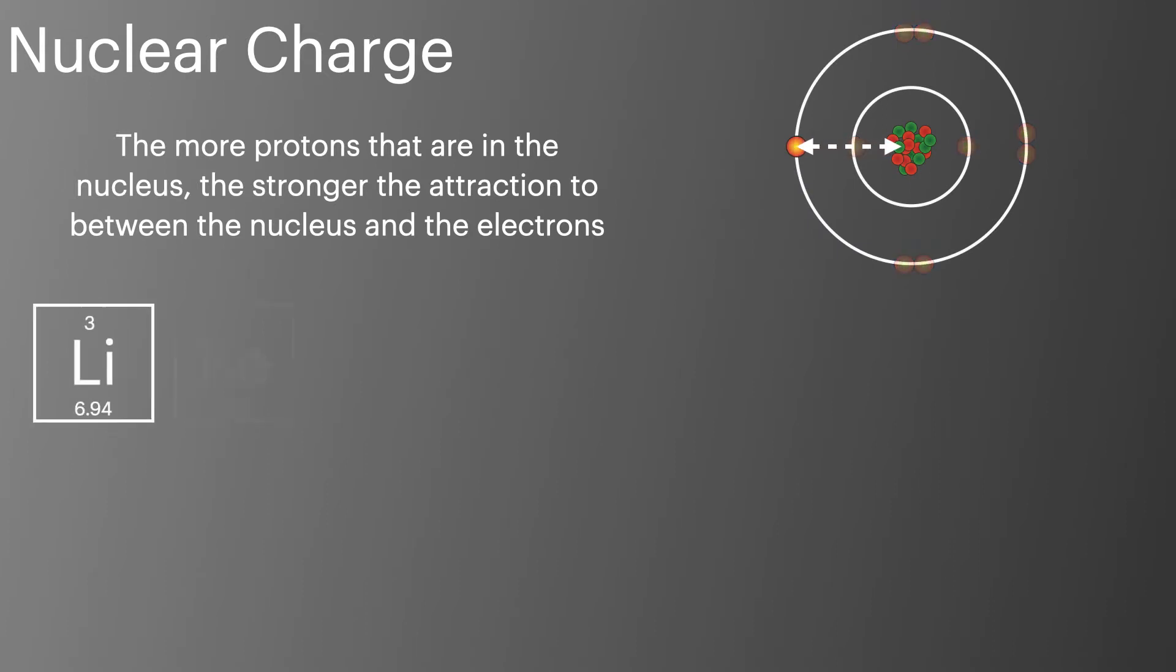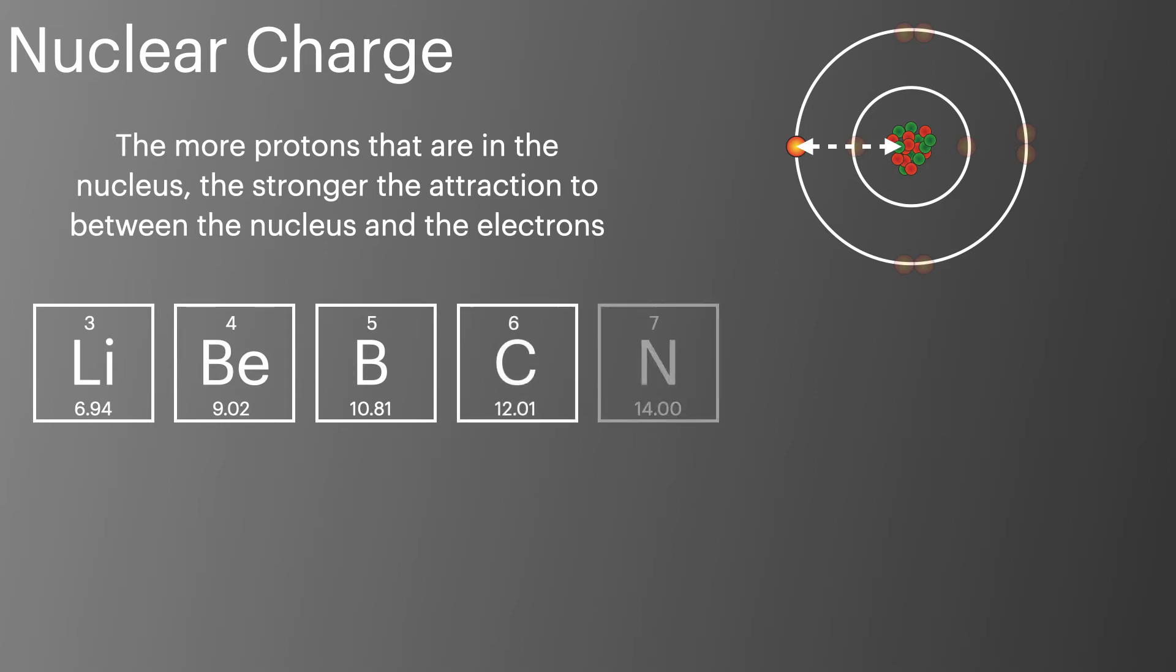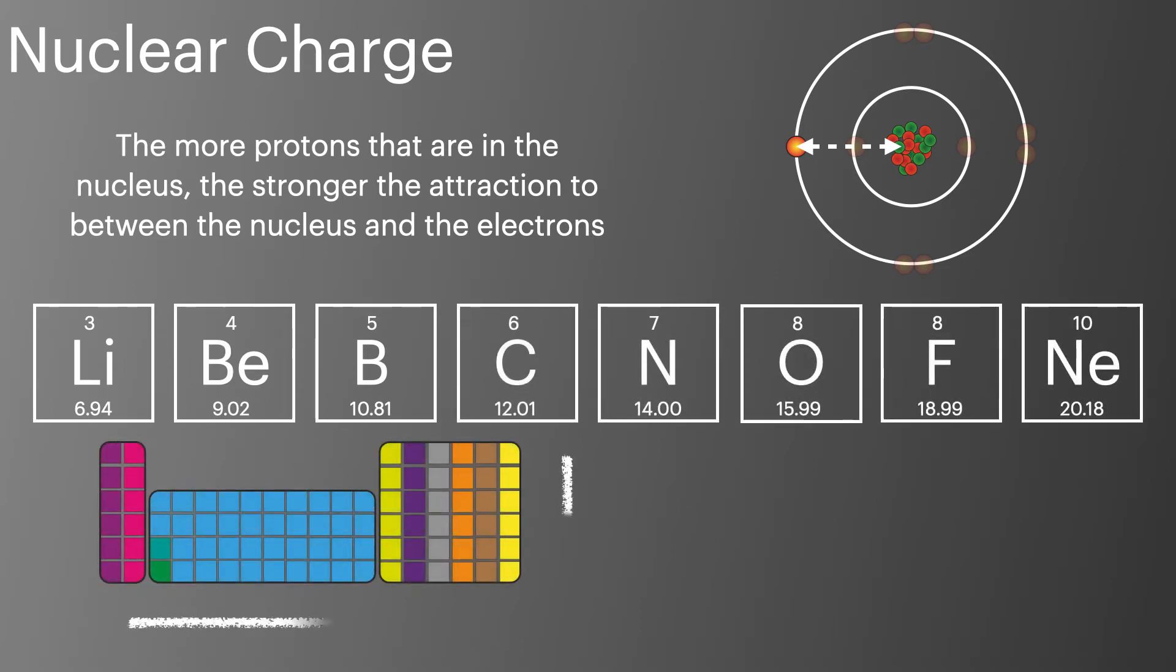The periodic table is arranged in order of the number of protons each element has. So as we go across the periodic table from left to right the nuclear charge increases and as we go down the periodic table the nuclear charge also increases. An increase in nuclear charge increases the ionisation energy.